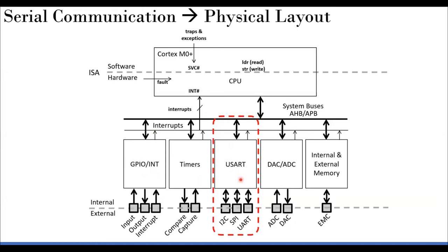The USART module is the most important interface for communicating with the outside world. It overcomes almost all limitations of GPIO. It can communicate via the normal bus architecture or via interrupts, configured similarly to how we set up timers and interrupts. Inside this module we will discuss three protocols: I²C (Inter-Integrated Circuit), SPI (Serial Peripheral Interface), and UART (Universal Asynchronous Receiver Transmitter).